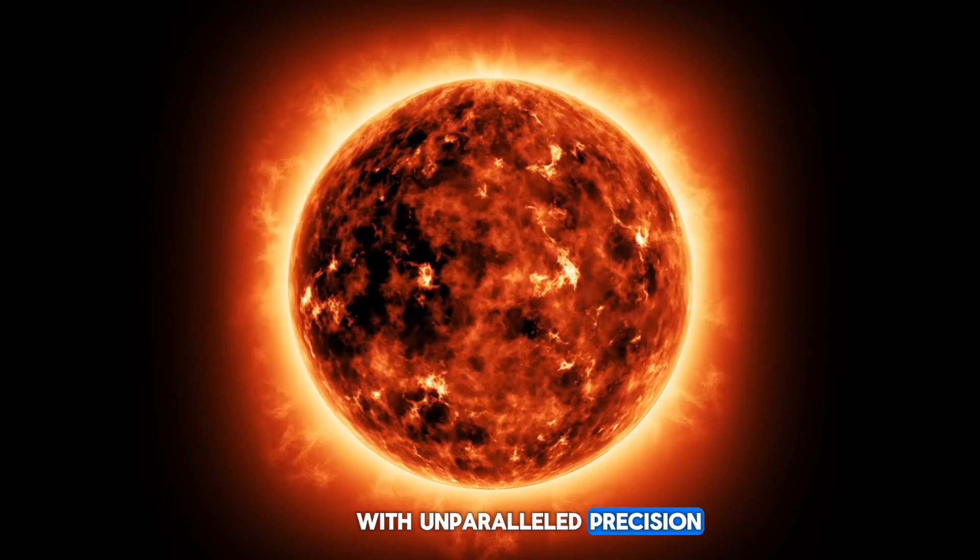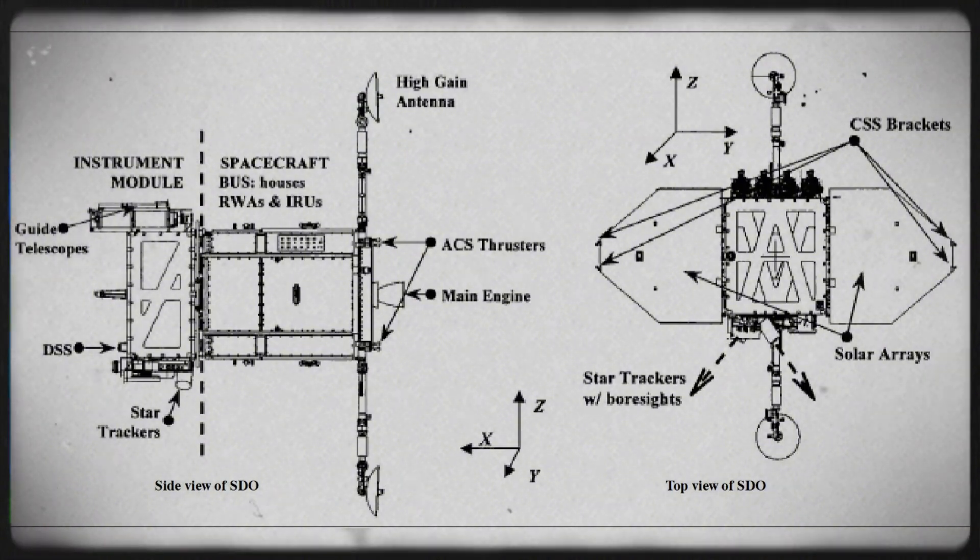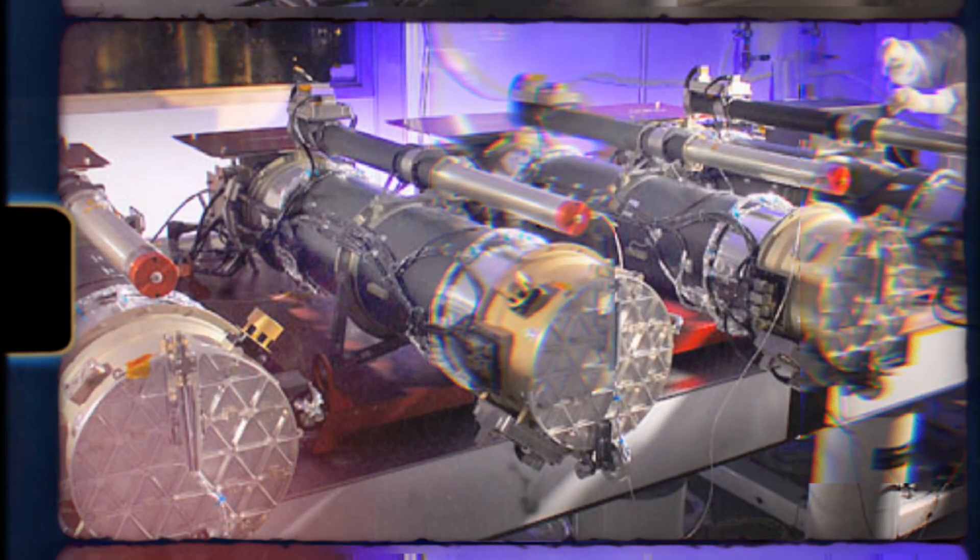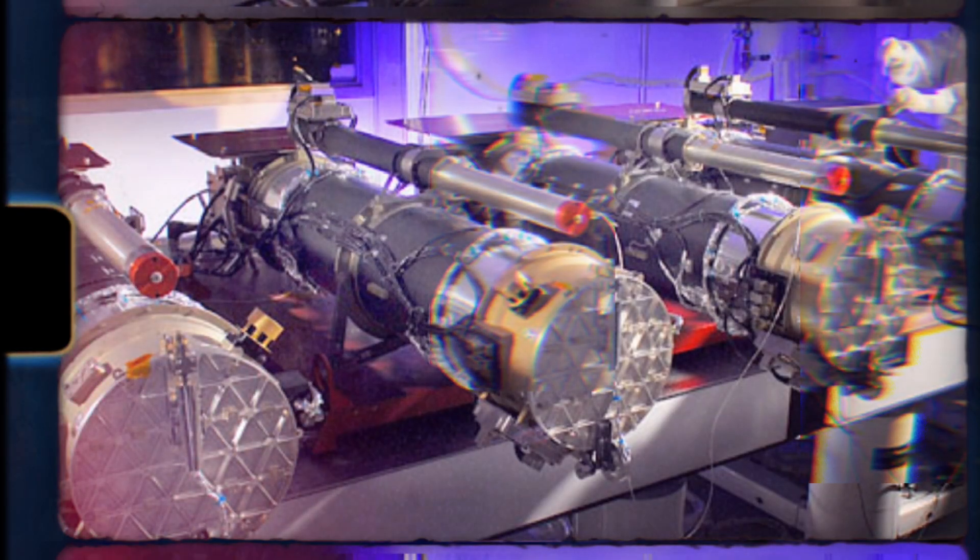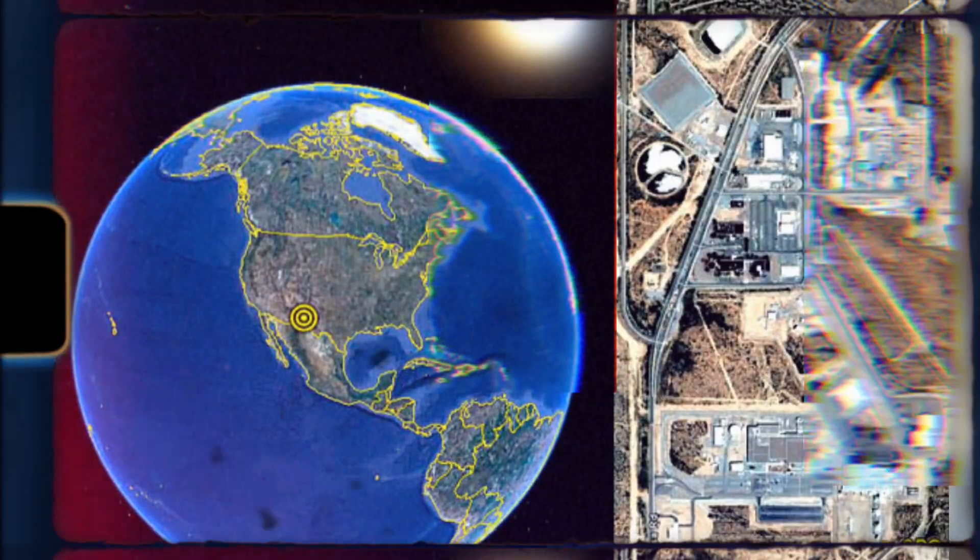At the core of this mission lies a collection of advanced instruments aboard SDO, each meticulously crafted to investigate various facets of the sun's behavior. A standout among them is the Atmospheric Imaging Assembly. This extraordinary tool captures images of the solar atmosphere at diverse wavelengths, each unveiling distinct features of the sun.